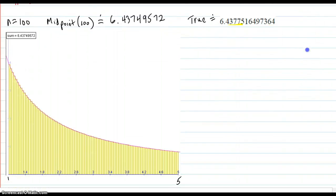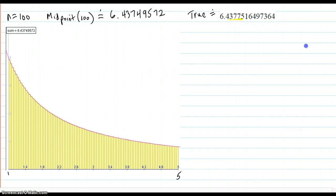And then we go on to 100 sub-intervals. As you can see on the picture here, looks very good, good fit. And you have your 6.437.